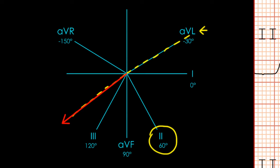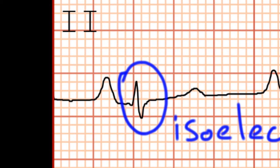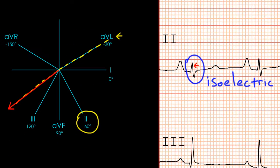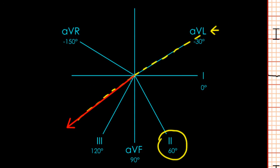For step three, to fine-tune the axis, we look back at our isoelectric lead and ask: is it slightly positive or slightly negative? Looking at lead two, the QRS complex is slightly positive, meaning our axis is moving slightly towards lead two — a little bit less than 90 degrees away from lead two. So to fine-tune our axis, we draw it a little bit closer to lead two. How would you interpret this axis? It's right axis deviation.